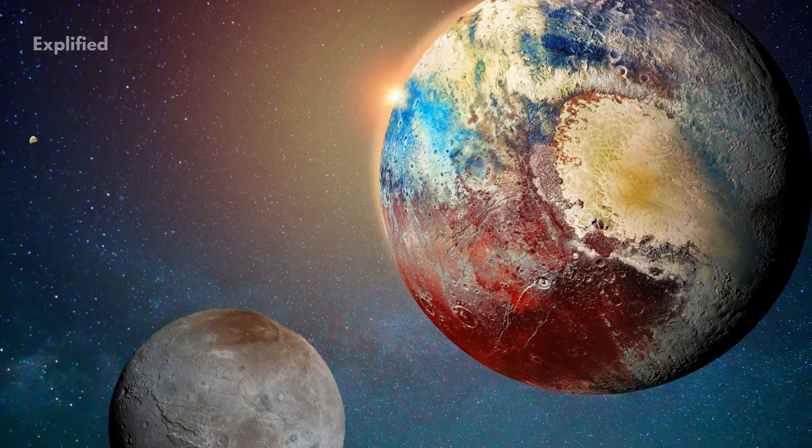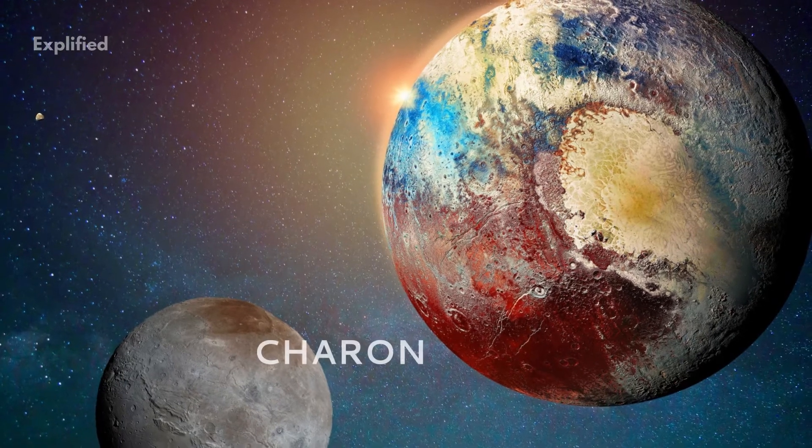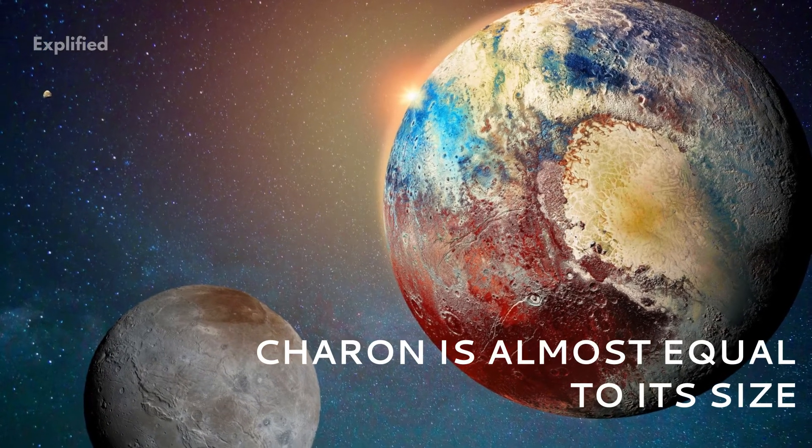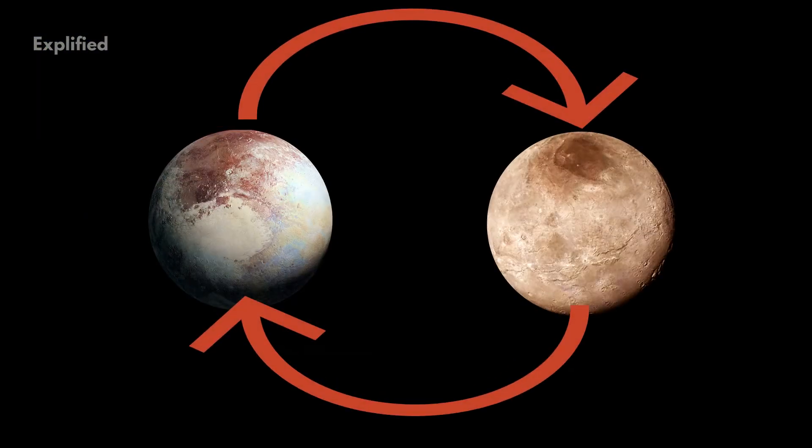Number 4. Pluto's largest moon, Charon, is almost equal to its size. This makes it look like two twin planets orbiting each other.